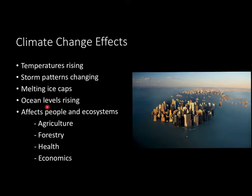Ocean levels will rise because of rising temperatures and melting ice caps — really everything is interconnected. These effects are going to affect all people and ecosystems: it's going to be hard to produce agriculture as we do, forestry is going to change, health is going to change, and our economies are going to change. There's a computer-generated image of Manhattan here — by 2080, New York City and Manhattan might be underwater if we don't figure out a solution. These are really pressing issues we need to address.